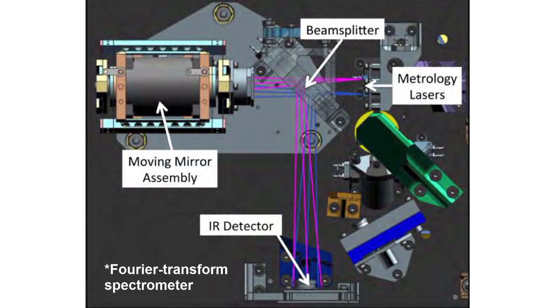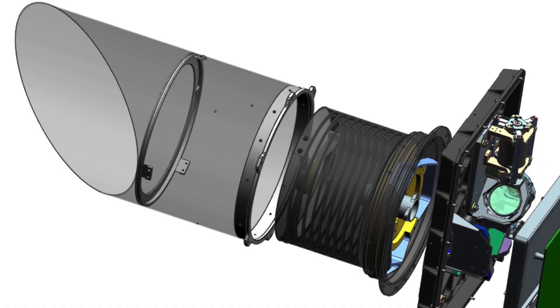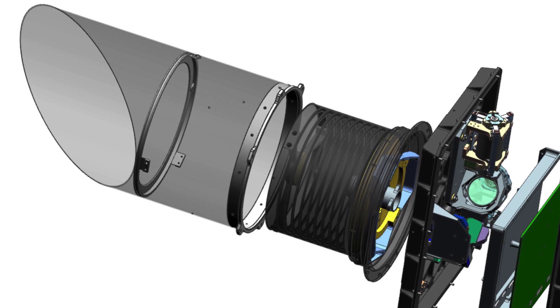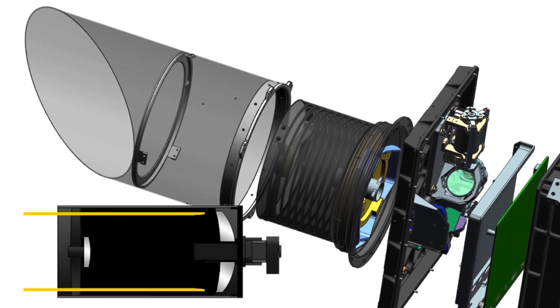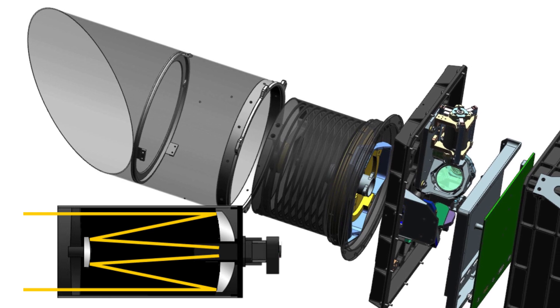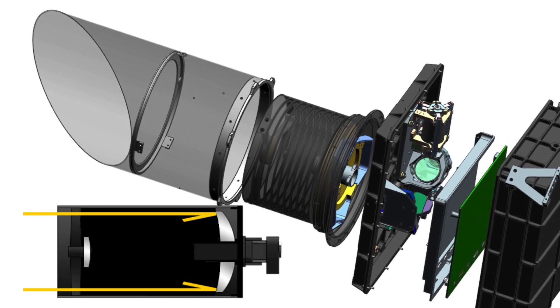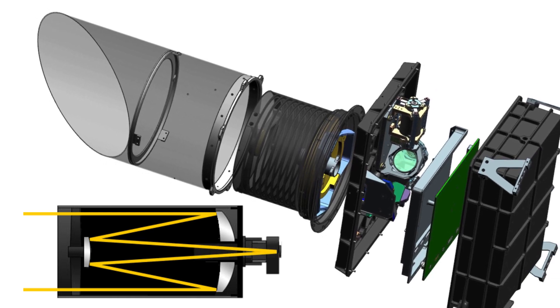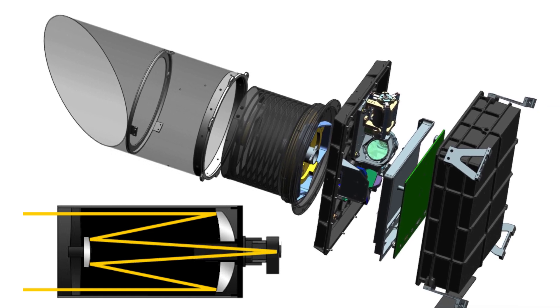So let's talk about how OTIS turns asteroid Bennu into data. Infrared emission from Bennu is first collected by a telescope integrated into OTIS. This is a Ritchie-Chretien type reflecting telescope. This type of telescope is compact for a given focal length and also has less lens distortion at its edge compared to a Newtonian reflecting telescope. After the light has been collected and focused by the telescope, it is sent to the interferometer.